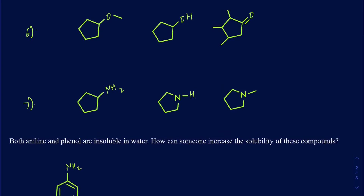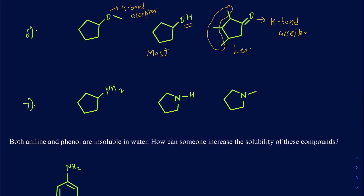In this next comparison, we have an ether functional group, an OH group, and a structure with more carbon groups. The ether oxygen is a hydrogen bond acceptor, and the OH is also a hydrogen bond acceptor — but the OH is also a donor. The more carbons you have, the more hydrophobic the compound. So the one with OH is the most soluble in water, and the one with the greatest number of carbon groups is the least soluble in water.